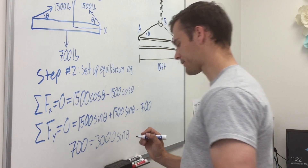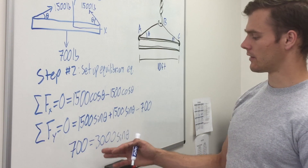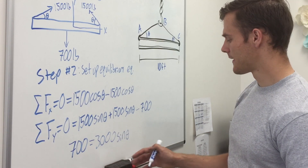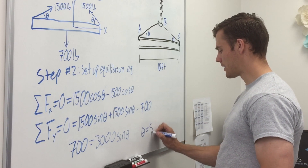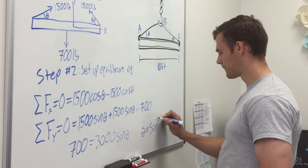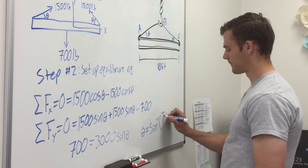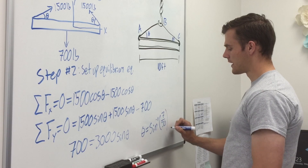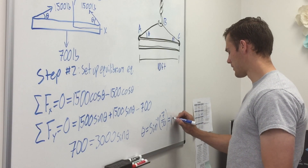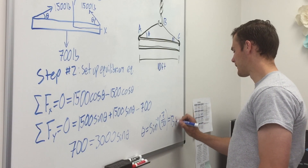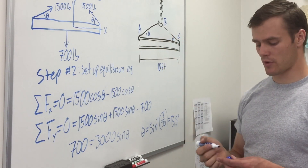We divide both sides by 3000 and take the inverse sine of both sides. That gives us theta equals arcsin(7/30). Plugging that into your calculator, you get theta equals 13.5 degrees. So each of these cable angles is 13.5 degrees.